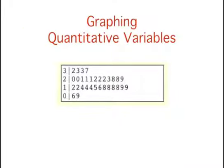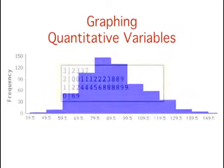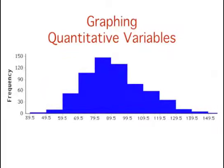There are many types of graphs that can be used to portray distributions of quantitative variables, and the upcoming sections cover several of these. Some graph types, like this stem and leaf graph, are best suited for small to moderate amounts of data, whereas others, like this histogram, are best suited for large amounts of data.